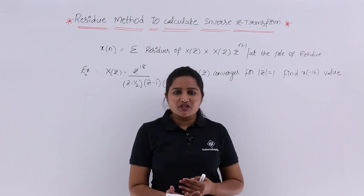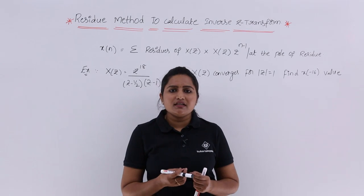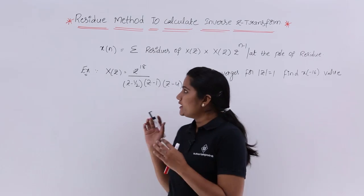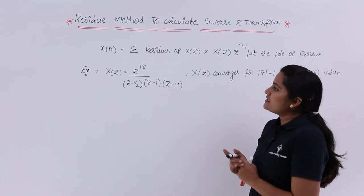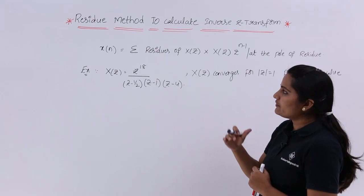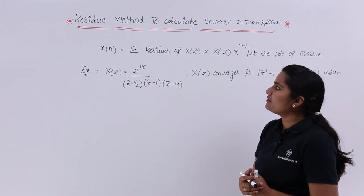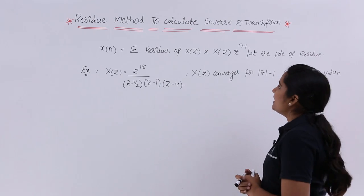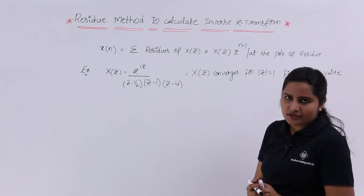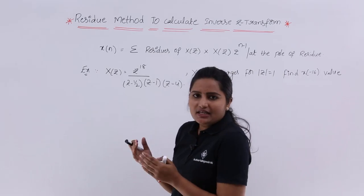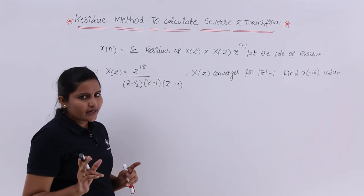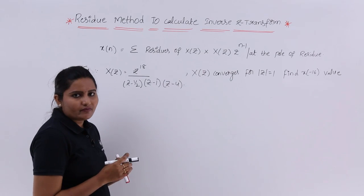This method is specially used when they are asking the value of the Z transform at any specific instant of time. This is the residue theorem: X(N) is equivalent to the summation of residues of X(Z) into Z^(N-1) at the poles. This equation will become very clear if we consider one example.